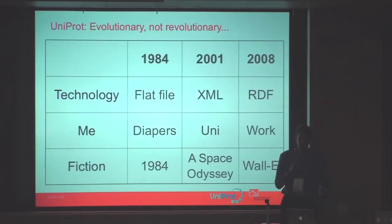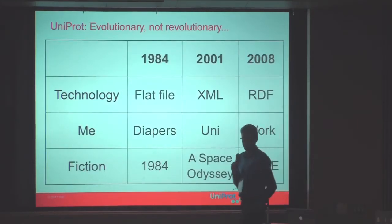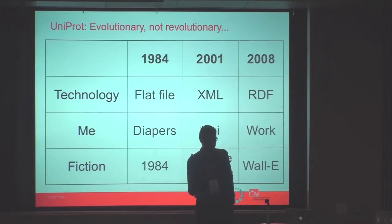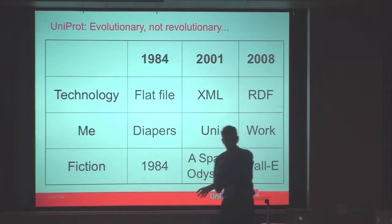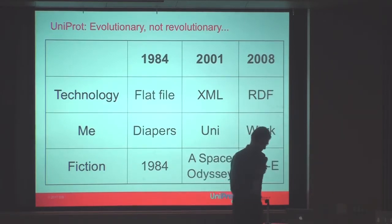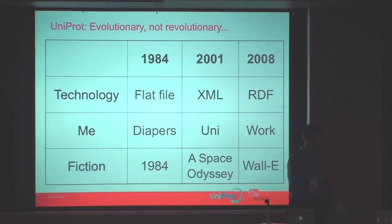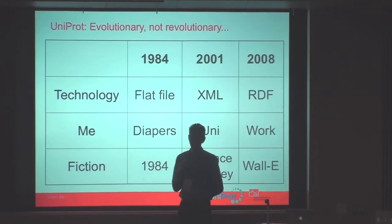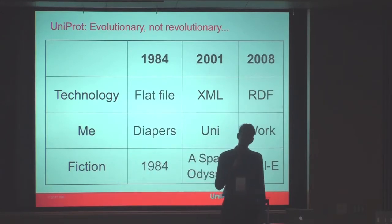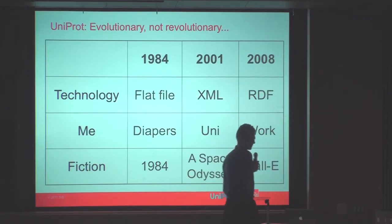UniProt data in its previous forms at SwissProt has been around for a long time. It started in 1984 with flat files — and I was crawling around on the floor in diapers. In flat file biological databases, you'd just put a number in square brackets and everybody would know it's a PubMed identifier and not an assembly accession number.